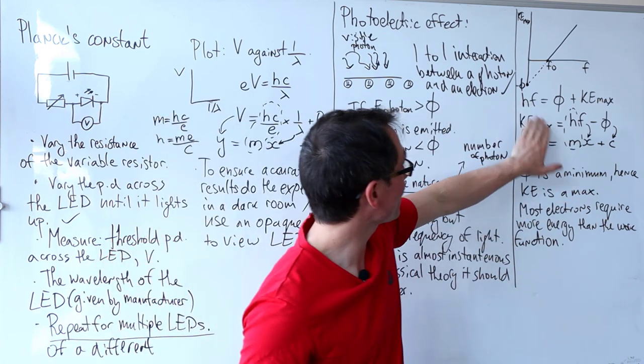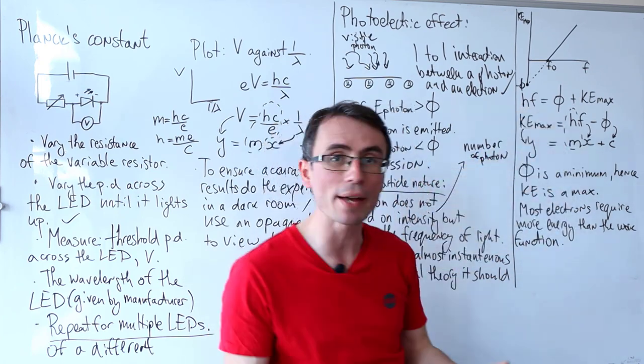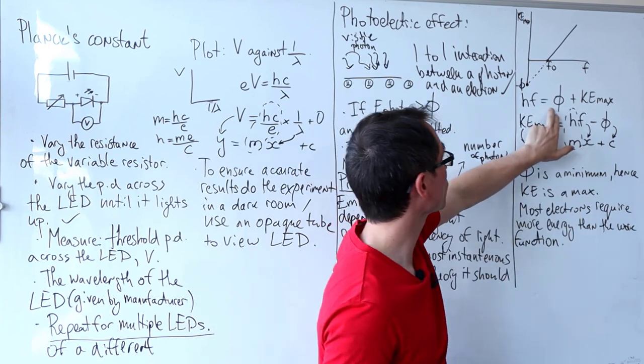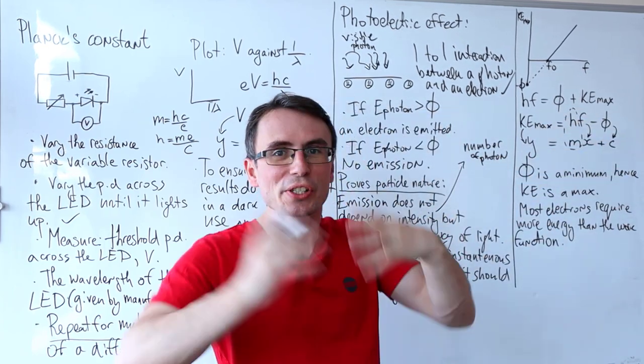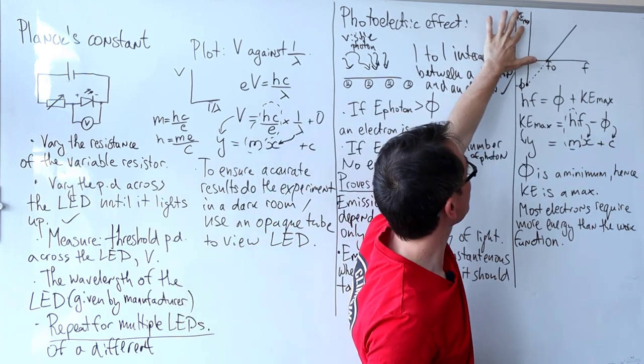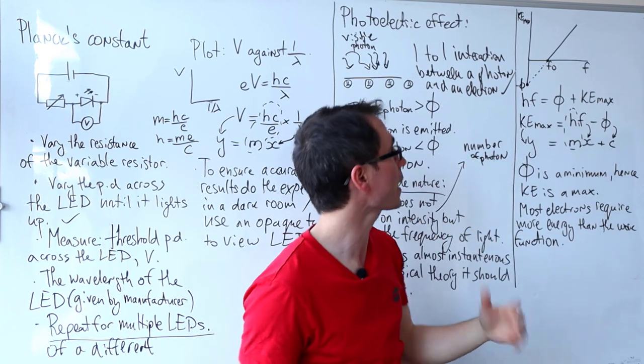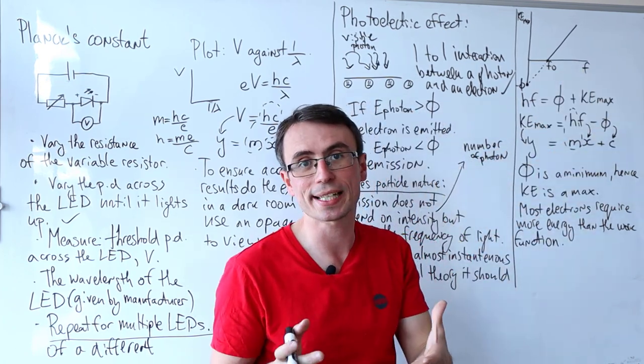The equation for the photoelectric effect is that the energy of the photon, either hf or hc over lambda, is equal to phi plus k max. Sometimes in experimental questions you come across this graph with maximum kinetic energy on the y-axis against frequency on the x-axis.